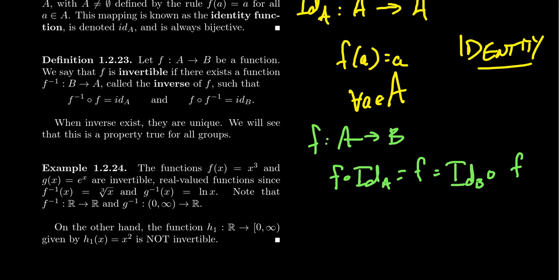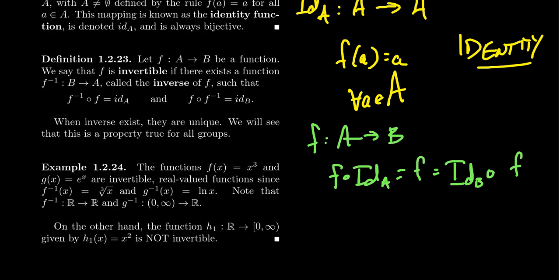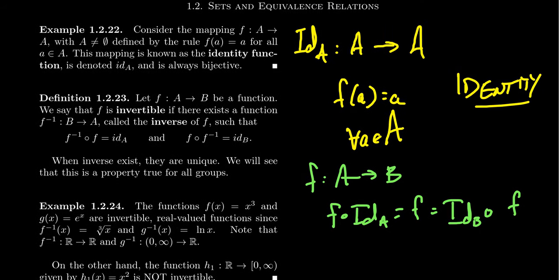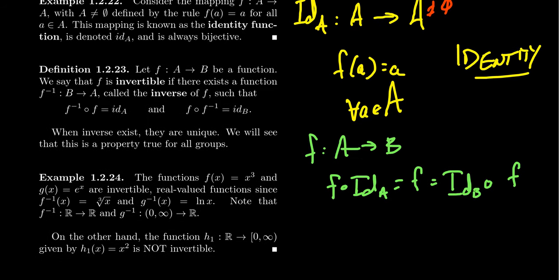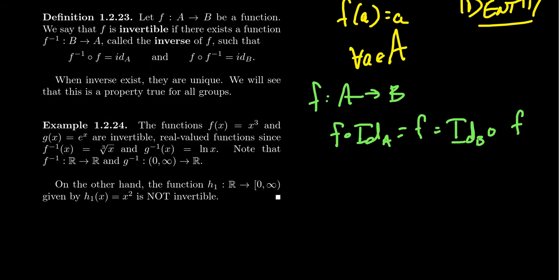The identity function is a bijective function — it's one-to-one and onto. I should also mention that we do stipulate the set A is not the empty set, because if you take a map from the empty set to the empty set, you get the empty function. It wouldn't satisfy the identity relationship and you'd have problems when composing things, so we do require that the domain of the identity function be non-empty.